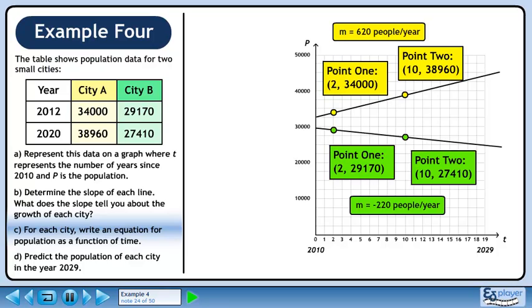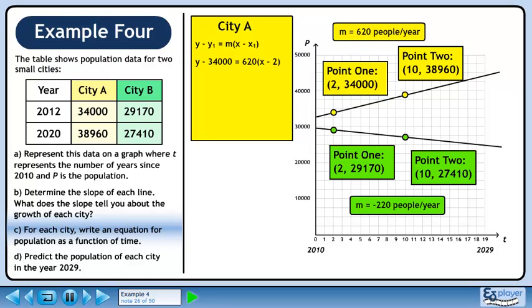Now we'll move on to part C. For each city, write an equation for population as a function of time. Let's find the equation for city A. We'll use slope point form since the y-intercept is not easily read from the graph. Plug in the values for x1, y1, and m. We'll use the first point to get x1 and y1.